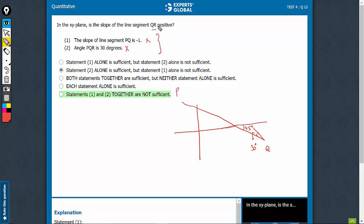So is the slope of line segment QR positive? We get, in this case, we get no as an answer.